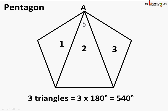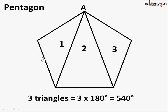We can do the same for a pentagon. From point A we draw two diagonals — one diagonal and another diagonal — and as you can see the pentagon is now divided into three triangles: the first triangle, the second triangle, and the third triangle. So the sum of interior angles of this pentagon is three times 180 degrees, which equals 540 degrees.